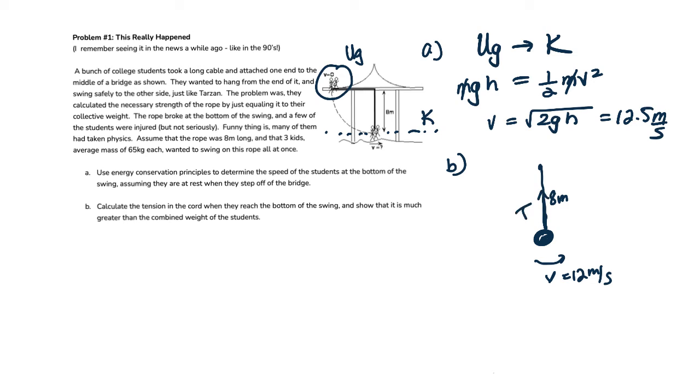Upwards pulls the tension. Downwards pulls the collective weight. And since the centripetal direction in this particular circle is upwards, the net centripetal force must be up, so tension must be greater than weight. And I'll note that on the side.